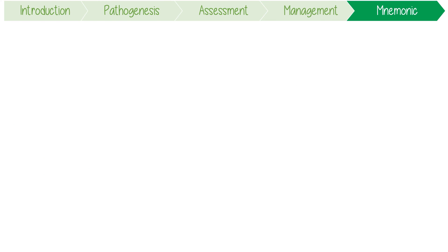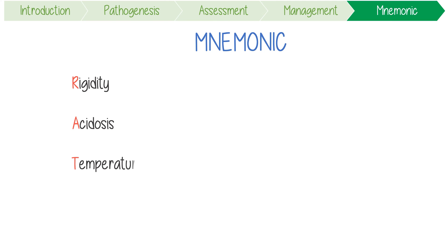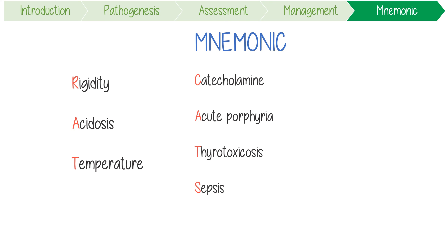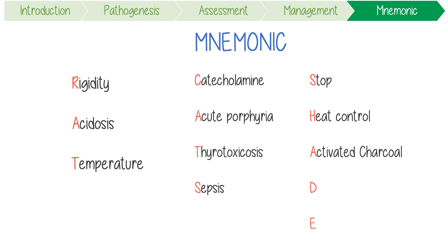To summarize: malignant hyperthermia has RAT features — rigidity, acidosis, and a temperature — which means you should always consider CATs as differentials: excessive catecholamines from a pheochromocytoma, acute porphyria crisis, thyrotoxicosis, and sepsis. It literally has hyperthermia in the name, so you should manage it with SHADE: stopping the agent, achieving heat control, using activated charcoal filters, giving dantrolene, and optimizing electrolytes. Acronyms can be the best way to get through med school.